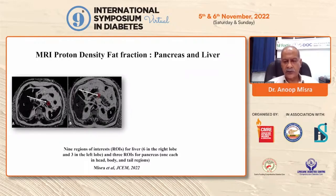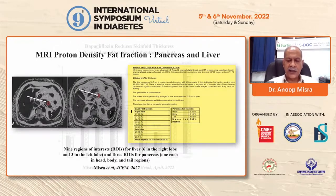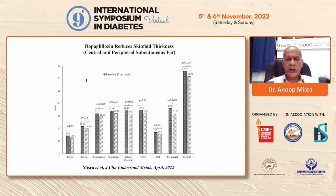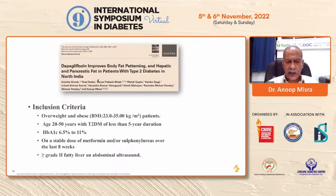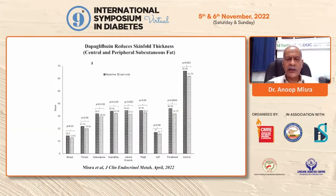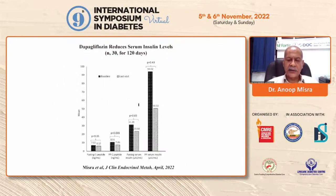The region of interest voxels show the percentage fat in the right lobe, left lobe, and pancreas. Over a period of eight to twelve weeks, the protocol led to a decrease in skinfold thickness — subcutaneous fat decrease — and also a decrease in fasting insulin level, postprandial insulin level, and C-peptide level.